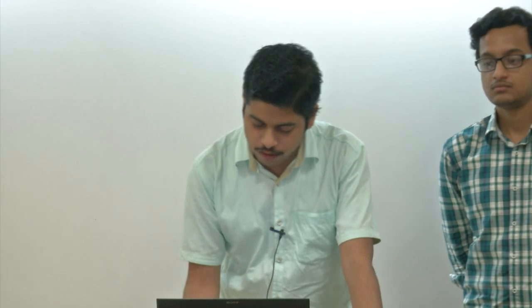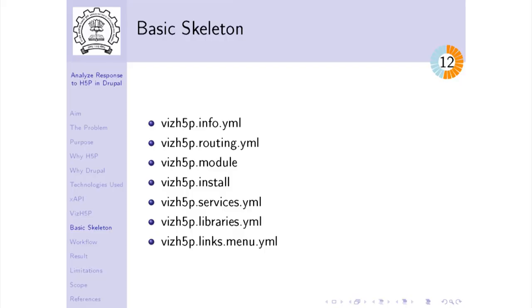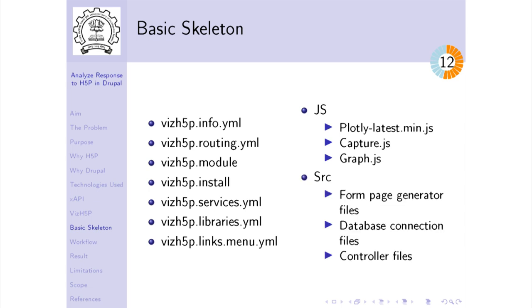I am going to talk about the basic skeleton of our module, VCH5P. The essential files include dot-info YML, routing YML, module, install, services dot YML, libraries, and links-menu dot YML — these are required for any custom Drupal 8 module. There is also a JS folder containing three files: plotly-latest-min dot JS, capture dot JS, and graph dot JS. Plotly is used for plotting and graph visualization, while capture dot JS and graph dot JS are custom JavaScript libraries. A source directory contains form generator files, database connection services, and controller files.